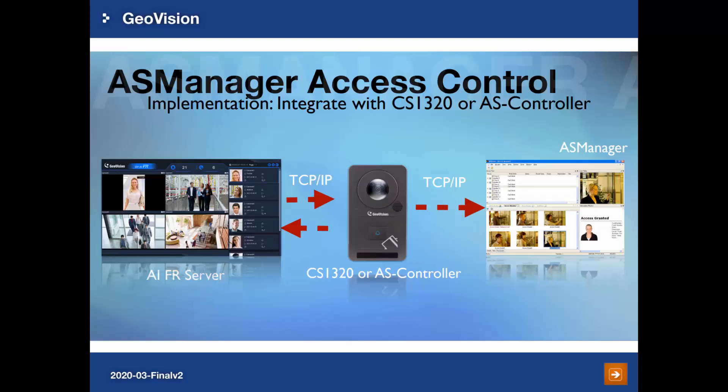Instead of VD8700, face recognition can also be done by the AIFR server, which supports multi-cameras. With CS1320, the camera can send the live view to the AIFR server for recognition, and the matched card number will be sent back to CS1320 for further verification. All data transfer is done by TCP/IP connection — no complicated wiring is required. These two solutions allow users to use their face as an access card, preventing problems like borrowed or missing cards.